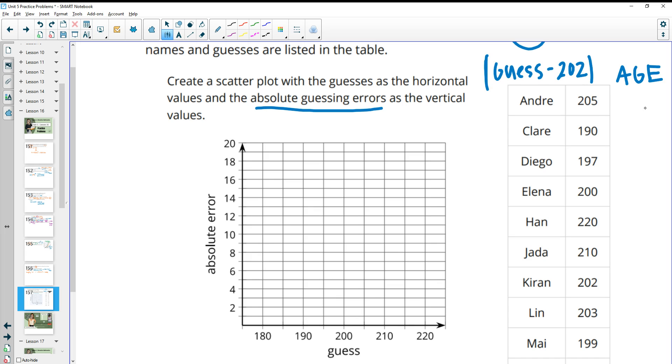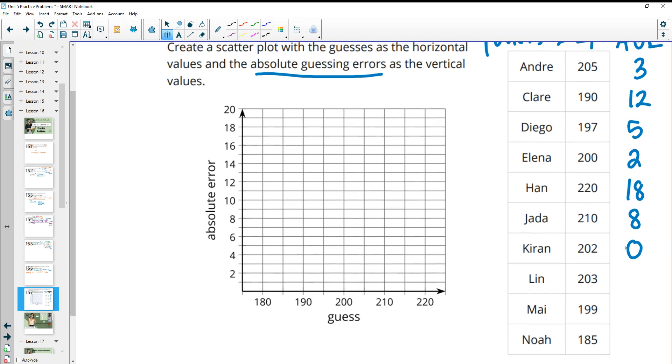So how far away is 205 from 202? 205 is 3 away. 190 is 12 away. 197 is 5 away from 202. 200 is 2 off. 220 is 18 off. 210 is 8 off. 202 is exactly correct, so that has an error of 0 because it's the exact right answer. 203 is 1 away. 199 is 3 away. And 185 is 18 away. So you subtract this 202 from this number and do the absolute value or the positive value of it.